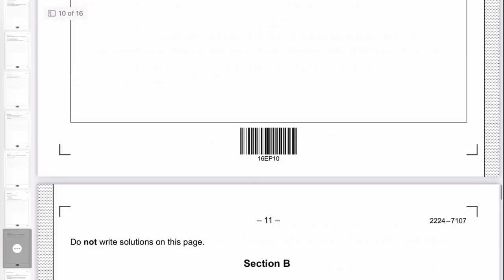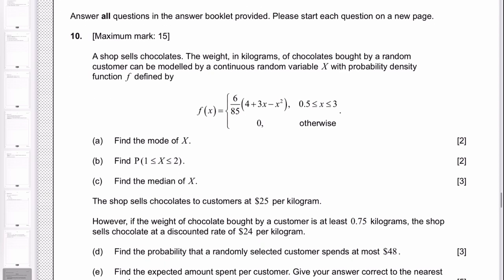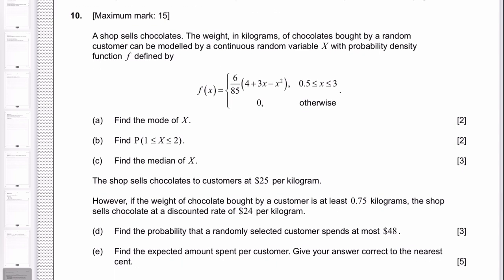For the last question of the section, that's not too hard. Question 10 is a continuous random variable question. Okay, interesting.